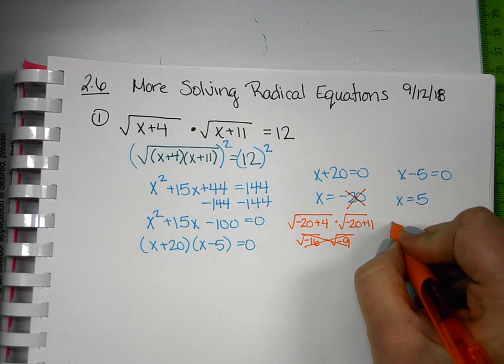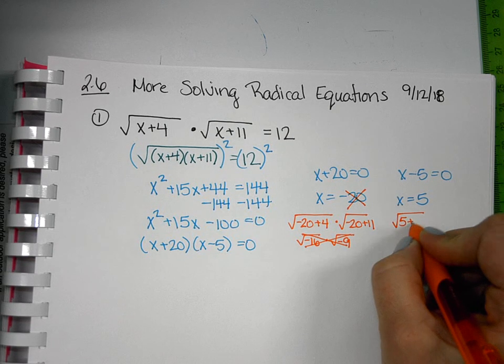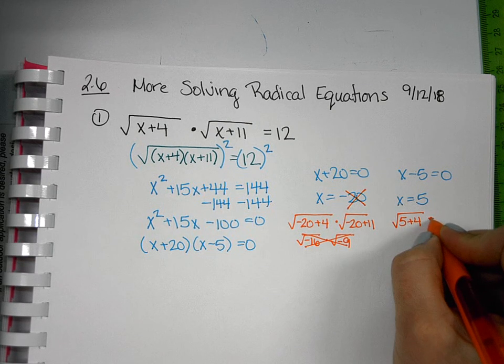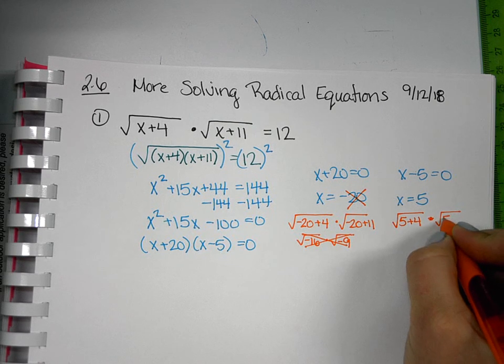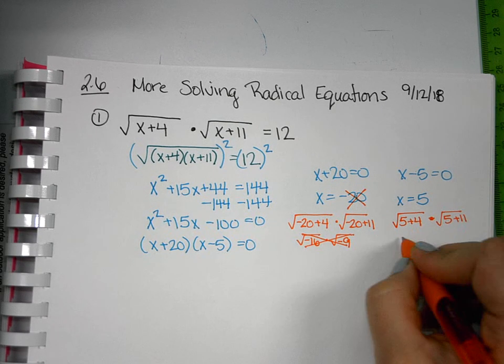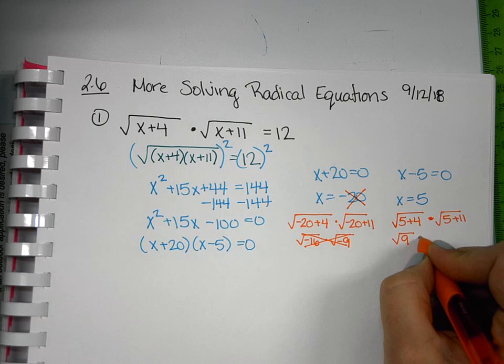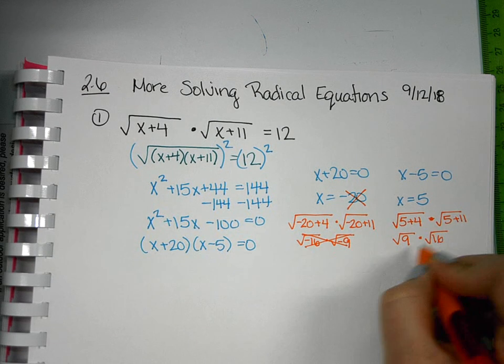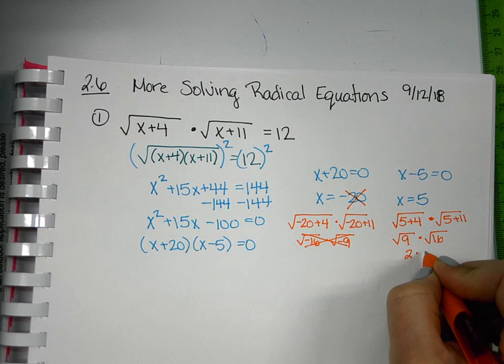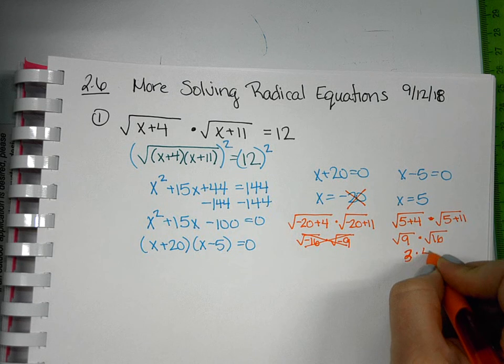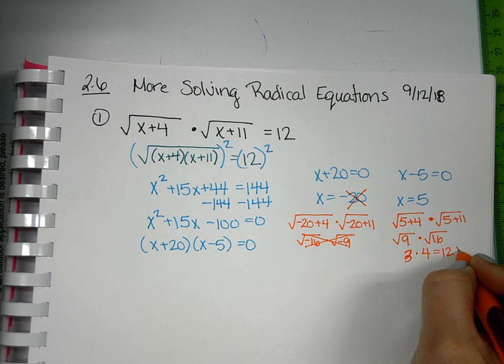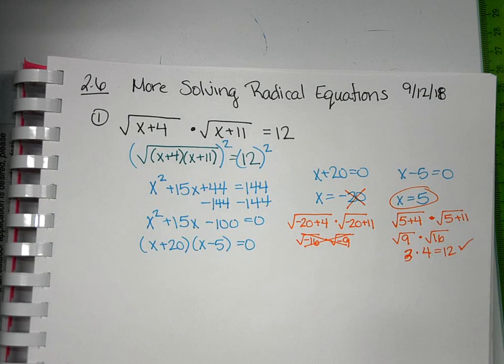If I go to the 5, 5 plus 4 times, and then 5 plus 11. We'll get the square root of 9, the square root of 16. So that's 3 times 4, which does in fact equal 12. So 5 would be our only solution here.